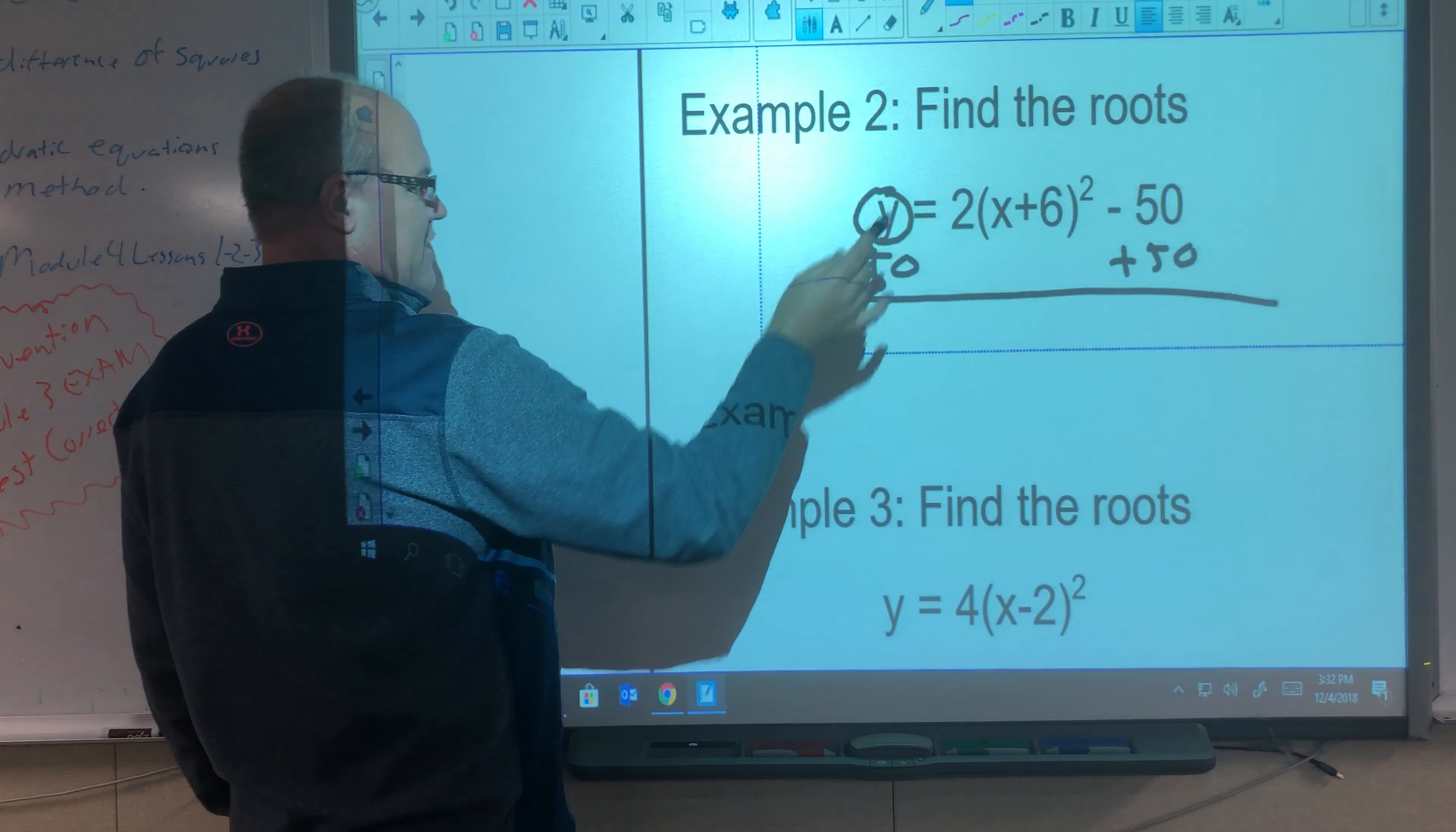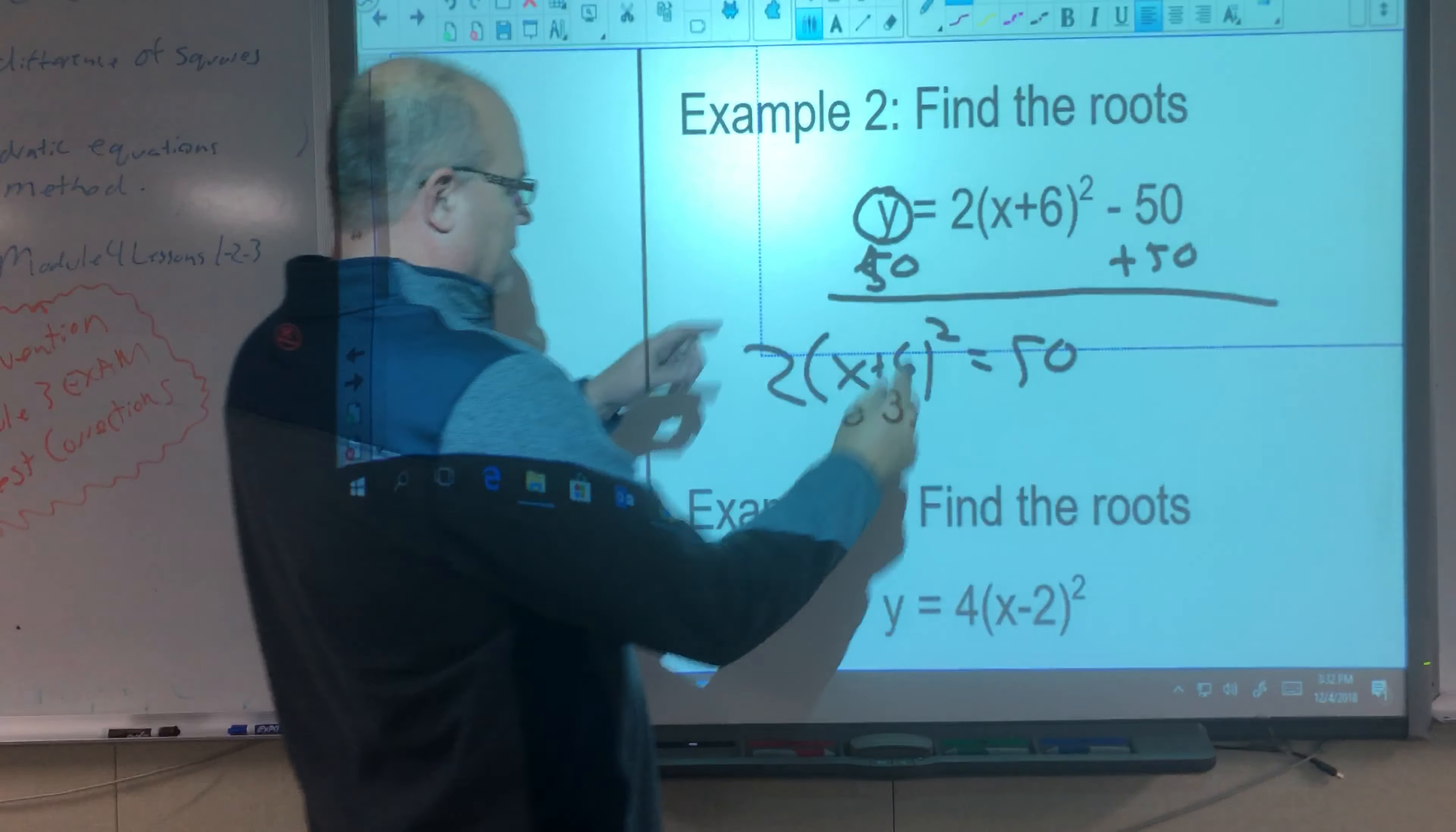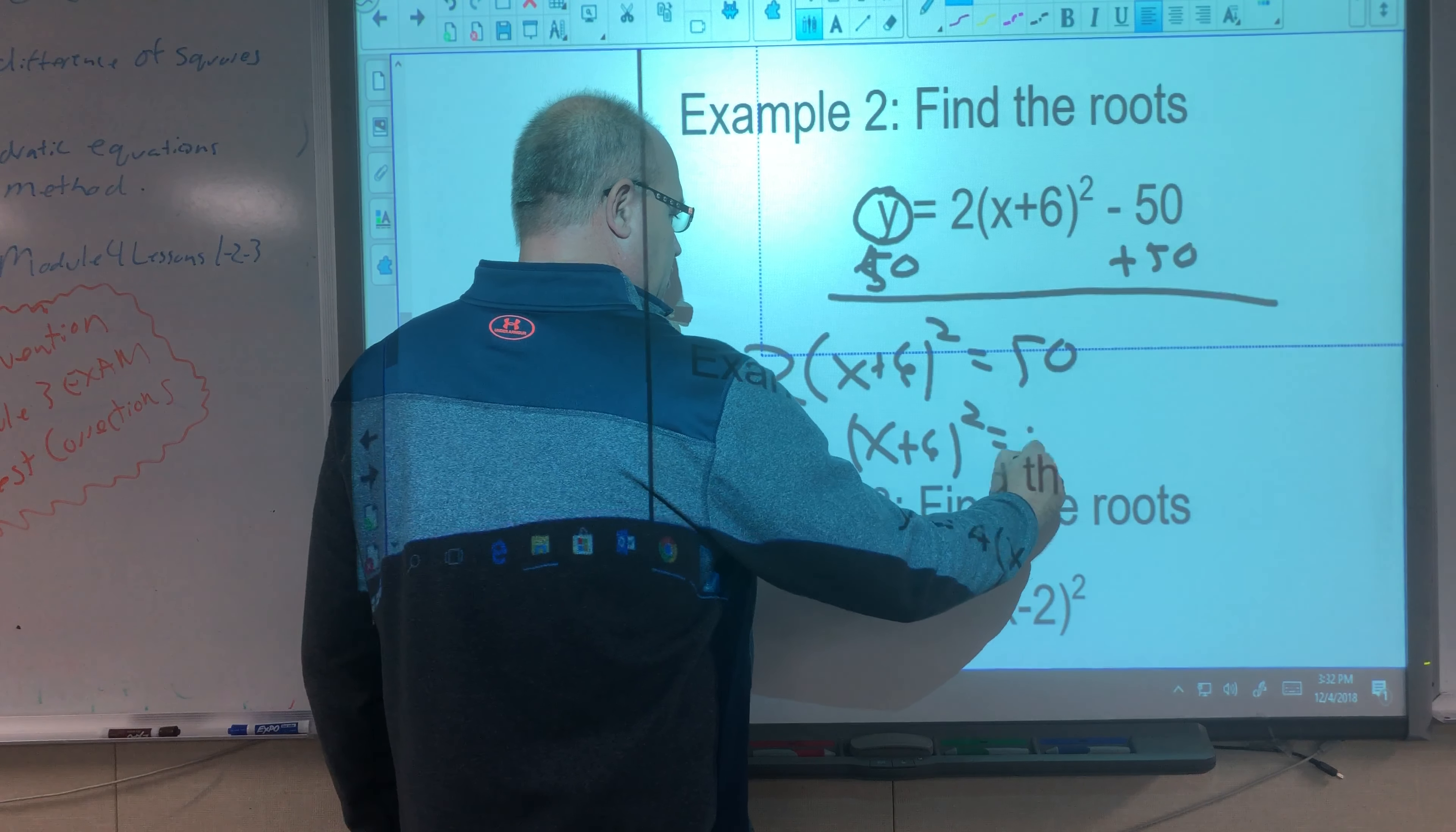I'm going to change the order of this. 2 times x plus 6 squared equals 50. It's just 50 on this side. Just flipped it. Now I want to undo it, so I divide both sides by 2. So I get x plus 6 squared equals 25.